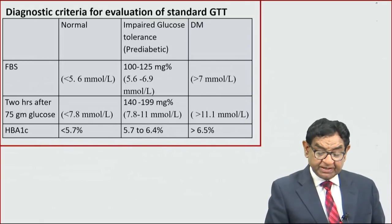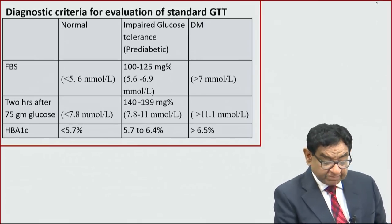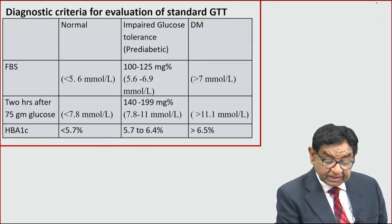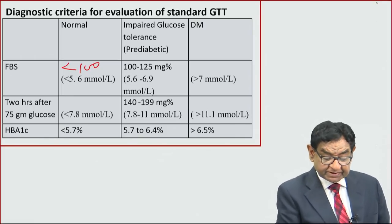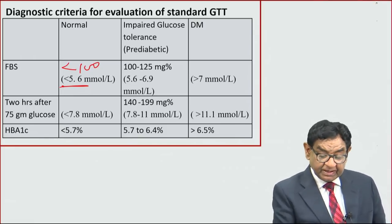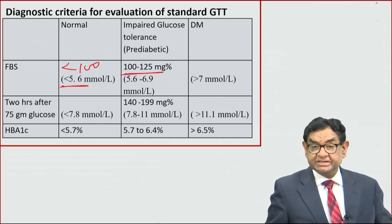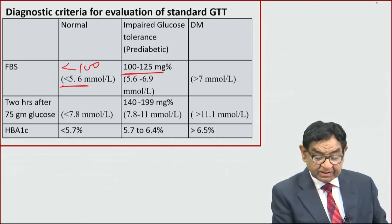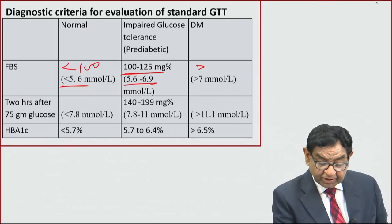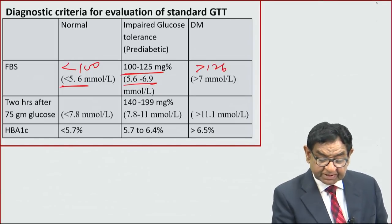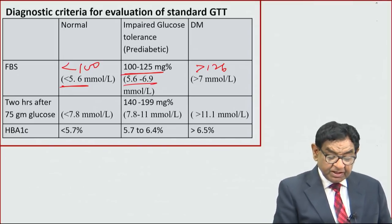Now, the diagnostic criteria for the standard glucose tolerance test: normal fasting blood sugar is less than 100 mg% (less than 5.6 mmol/L). Between 100 to 125 mg% (5.6 to 6.9 mmol/L) is pre-diabetic or impaired fasting glucose. More than 126 mg% (more than 7 mmol/L) is diabetic.